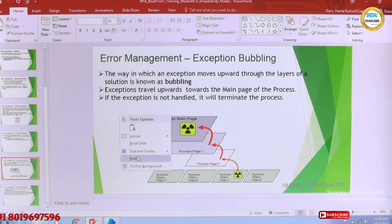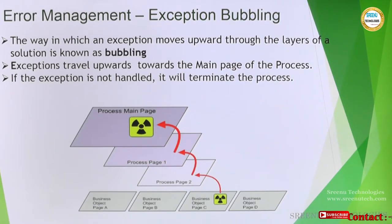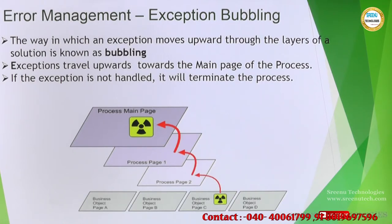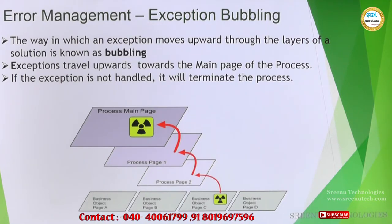Next we have something called exception bubbling. Exception bubbling is nothing but - we have seen in our business object that we created an exception and there is a recover and resume mode. When the recover and resume mode is there we are suppressing or providing a solution for the exception, so there is no problem for the process. But if it is not caught - if in some action in the business object there is an exception at page C and we do not have recover or resume logic there - it comes to process page 2, then to process page 1, and then to the main page. This moving of the exception to a higher level or to the calling page is called exception bubbling.